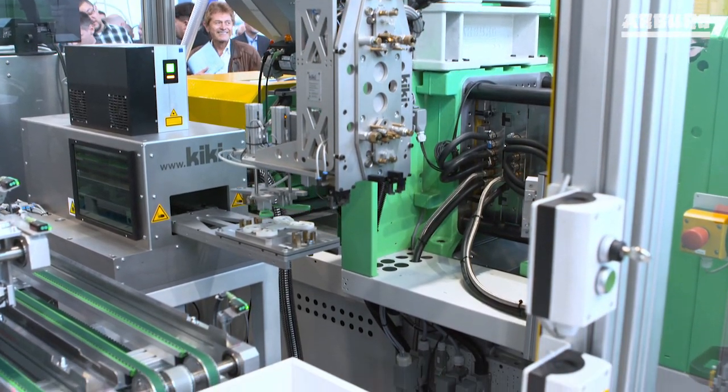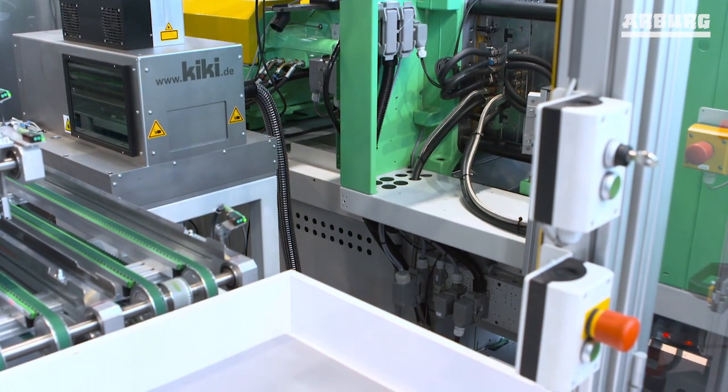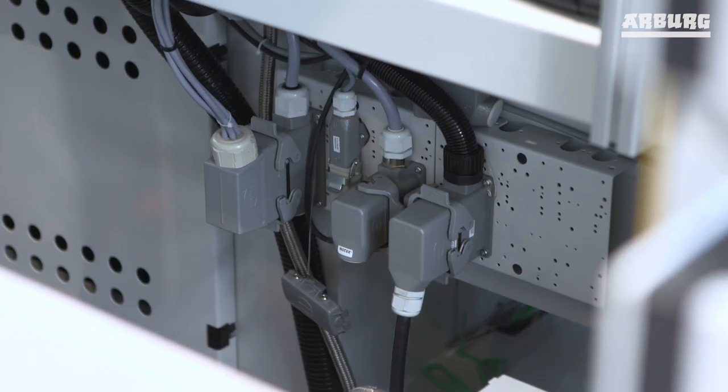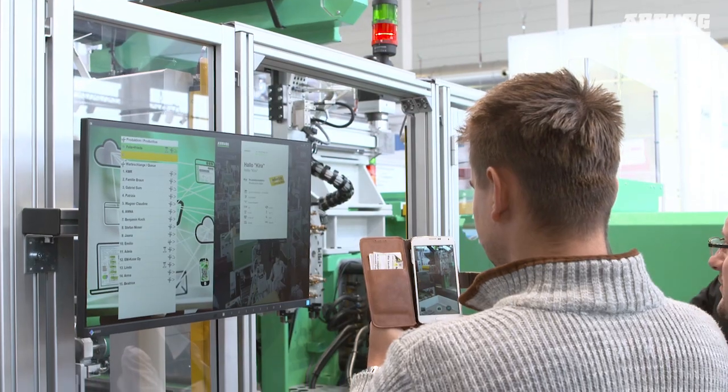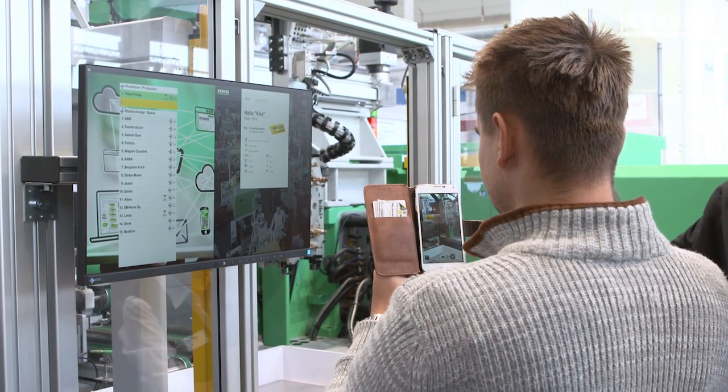Central process management ensures that the production and the automation processes can be observed, documented and archived.